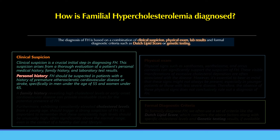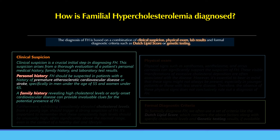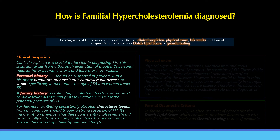Regarding personal history, FH should be suspected in patients with a history of premature atherosclerotic cardiovascular disease or stroke — specifically in men under 55 and women under 65. A family history revealing high cholesterol or early-onset cardiovascular disease can provide invaluable clues. Furthermore, consistently elevated cholesterol levels from a young age — often significantly above the normal range, even with a healthy diet and lifestyle — should trigger a strong suspicion of FH.